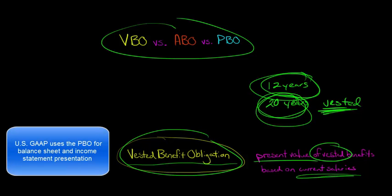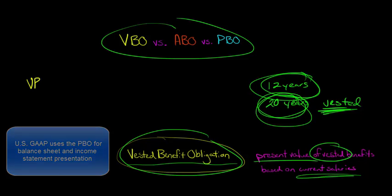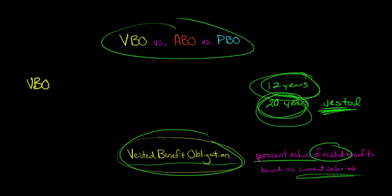So if we think about the size of these, the VBO is going to be the smallest. And then the ABO will be the next largest. And then the PBO, the Projected Benefit Obligation, will be the largest.